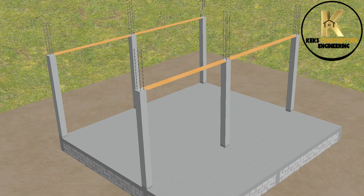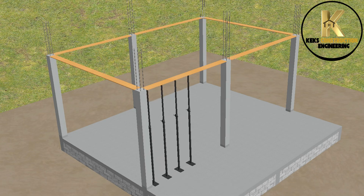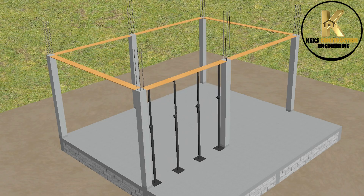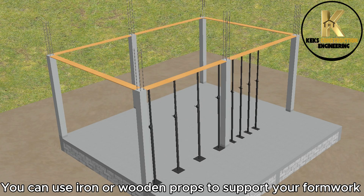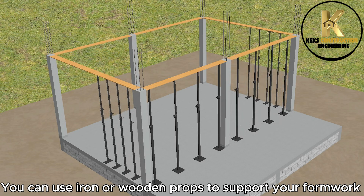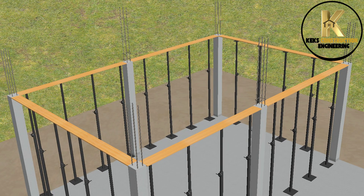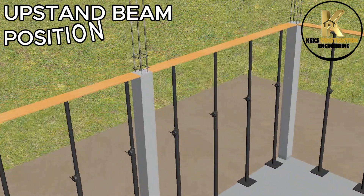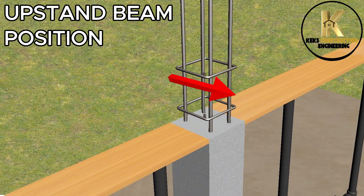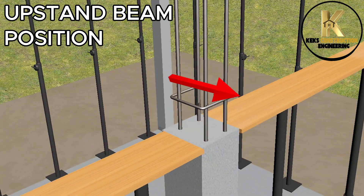Let's continue the construction process from this point to save time. We begin by fixing the bottom formwork to support the drop beams. Remember that this is the only place where the upstand beam will be constructed in this project — the rest of the beams are drop beams, as you can see.